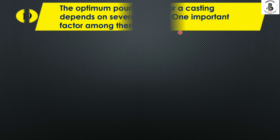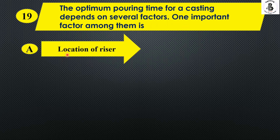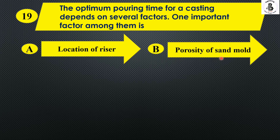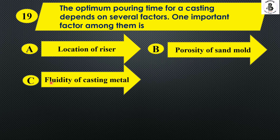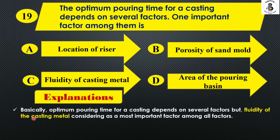The optimum pouring time for a casting depends on several factors. One important factor among them is: Option A location of riser, Option B porosity of sand mold, Option C fluidity of casting metal, and Option D area of the pouring basin. The major factor is the fluidity of the casting metal. The right answer is Option C.